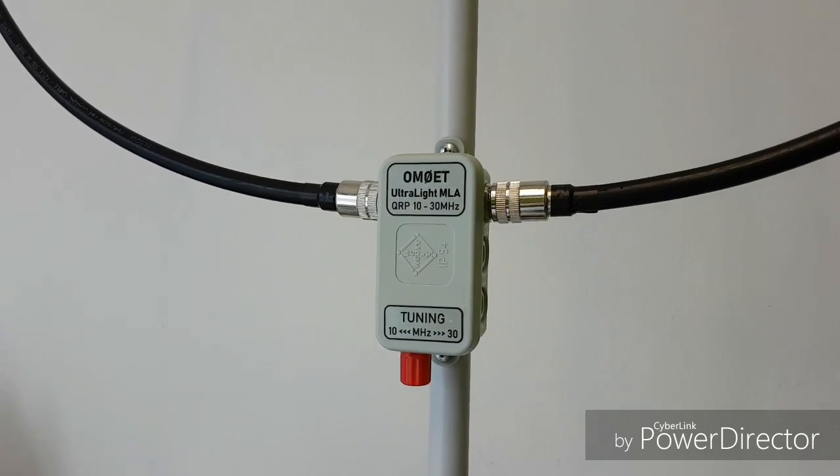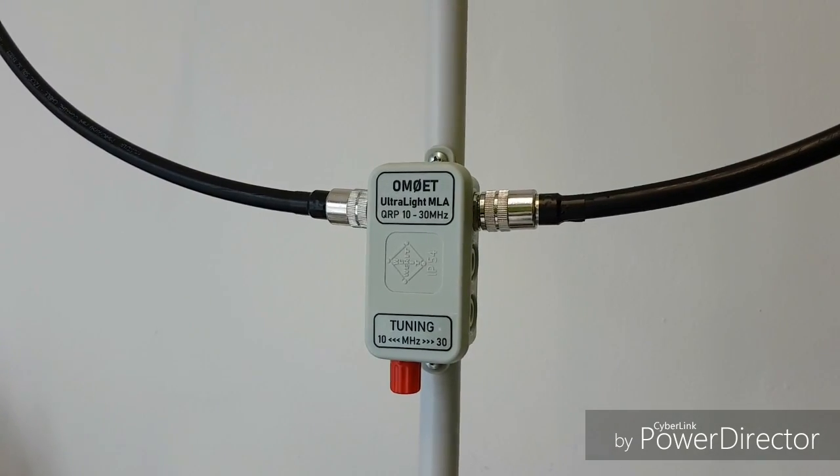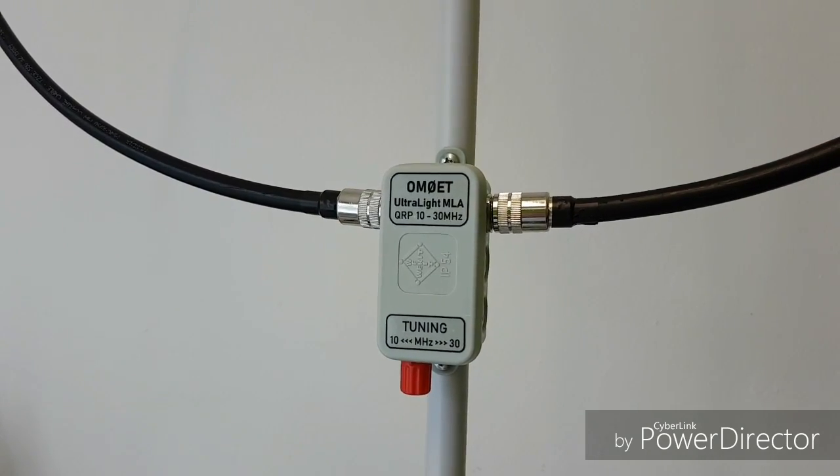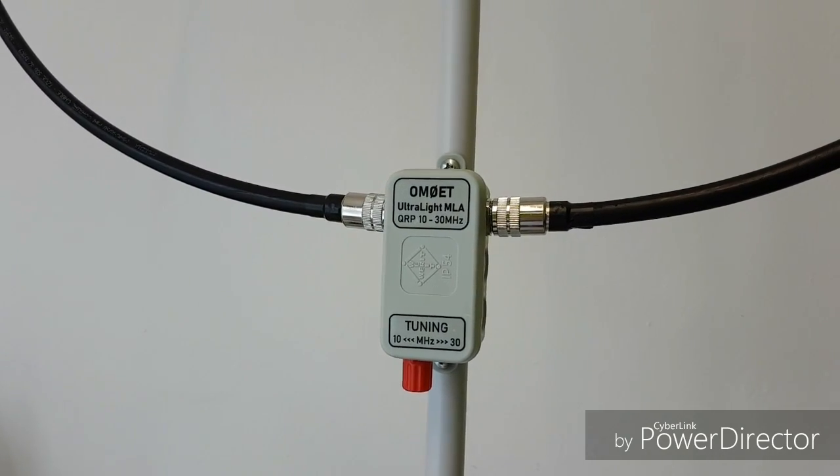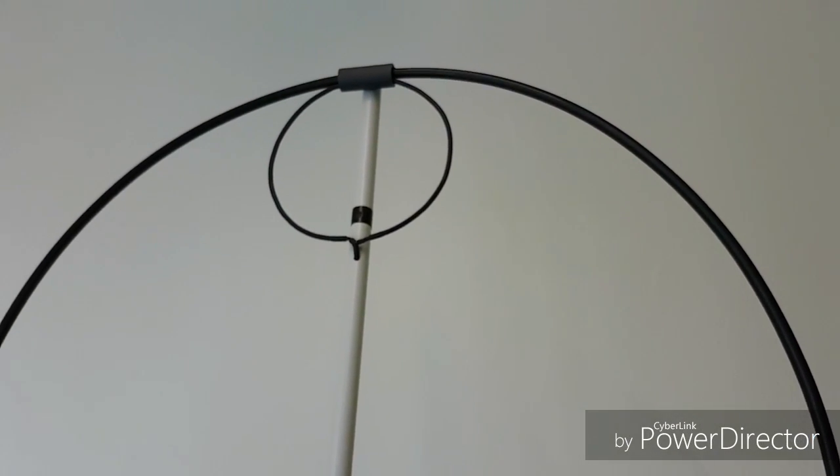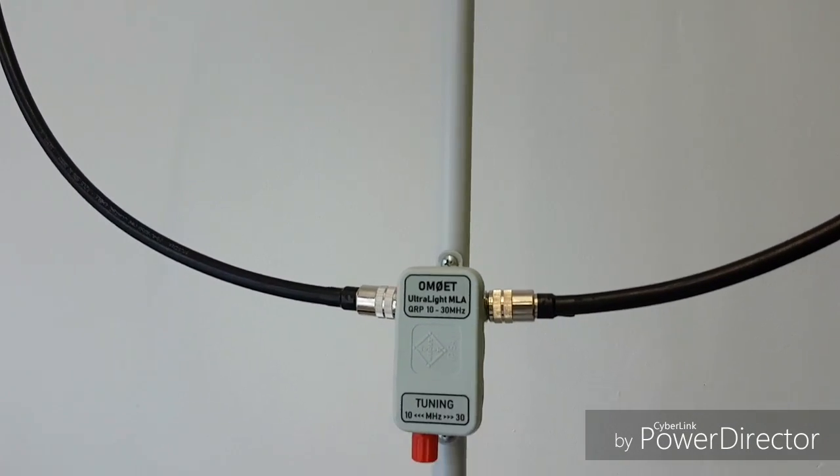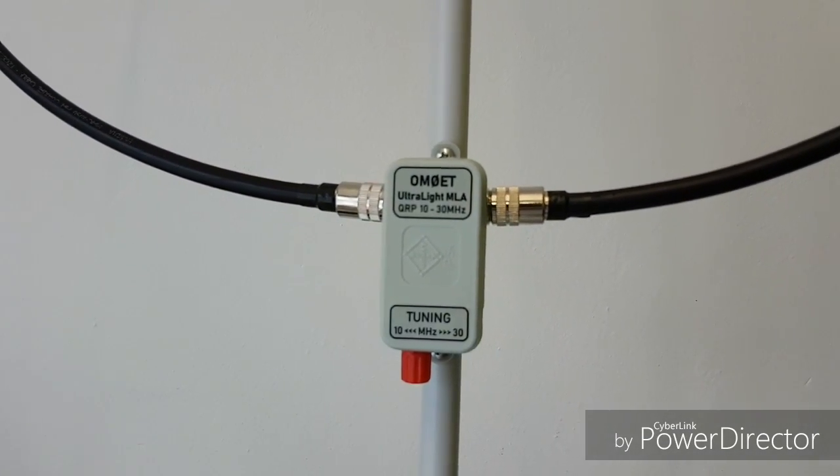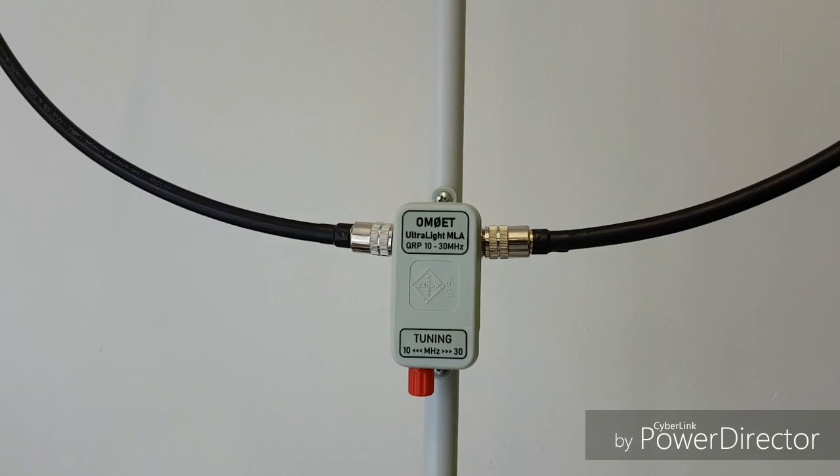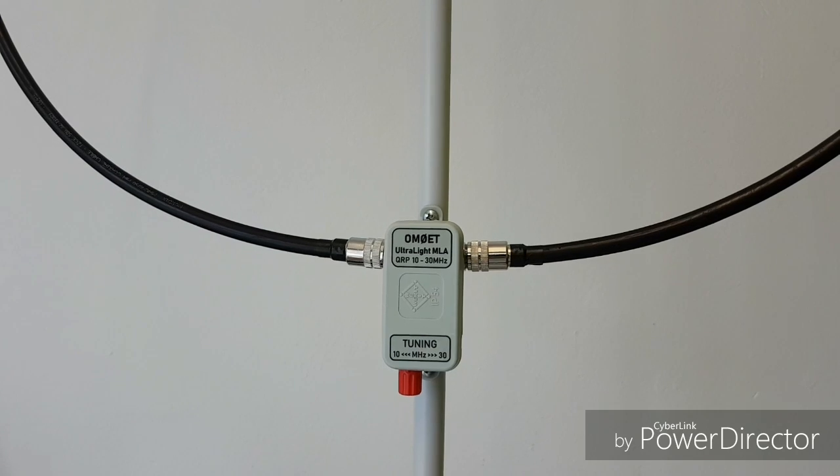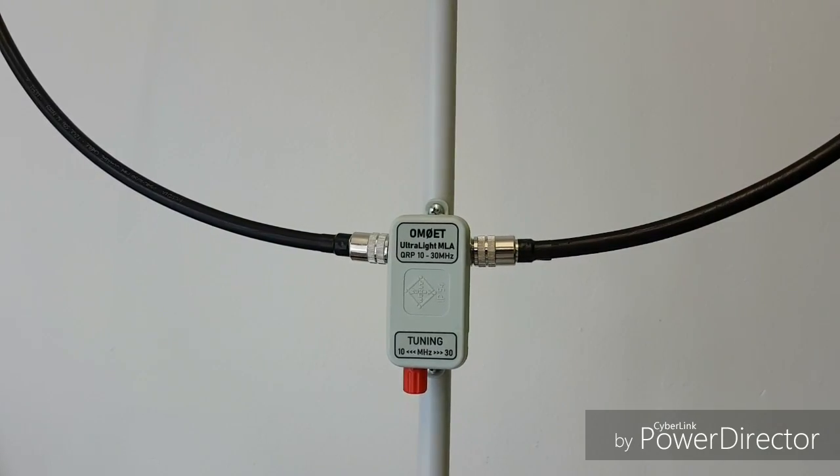Here you can see my latest magnetic loop antenna, the big brother of the previous ultralight magnetic loop that you had seen on my previous videos. This version is working from 10 megahertz to 30 megahertz, so if you compare with the previous version, this version has no 7 megahertz band.